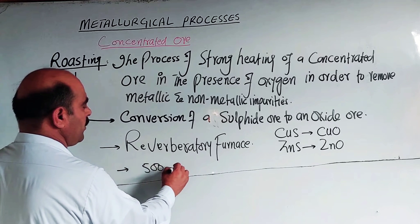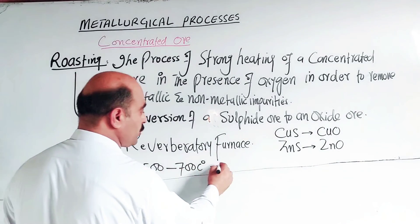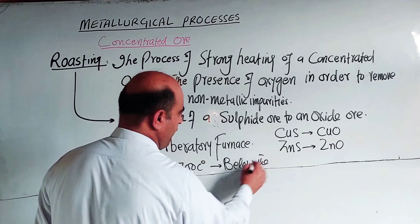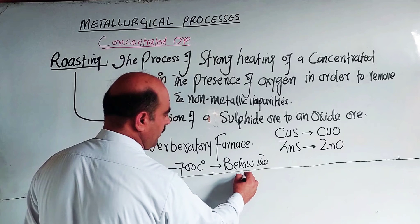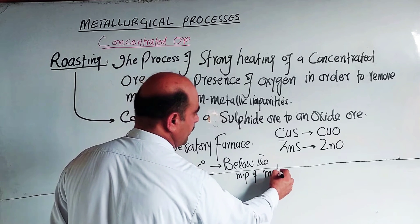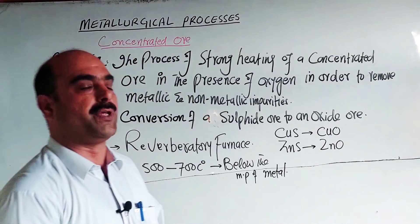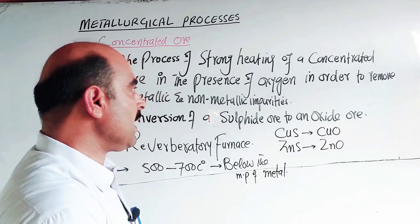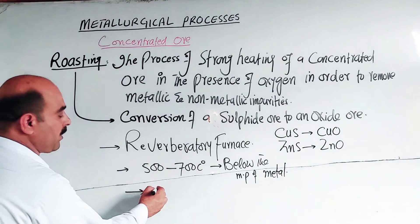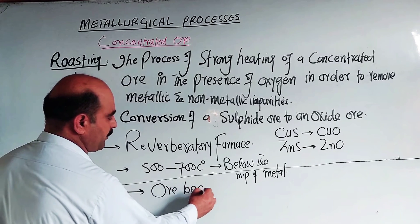The roasting process is carried out in a reverberatory furnace. The temperature used is 500 to 700 degrees Celsius. This temperature should be below the melting point of the metal being extracted, so the metal does not melt. The concentrated ore becomes porous as a result of this process.